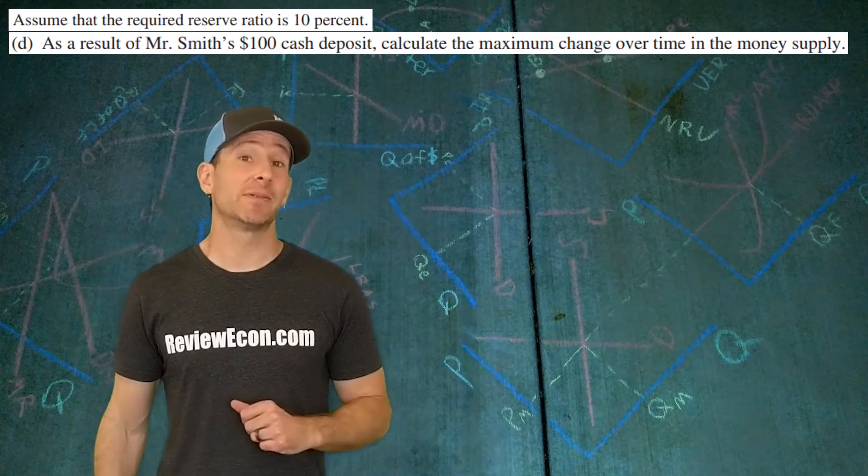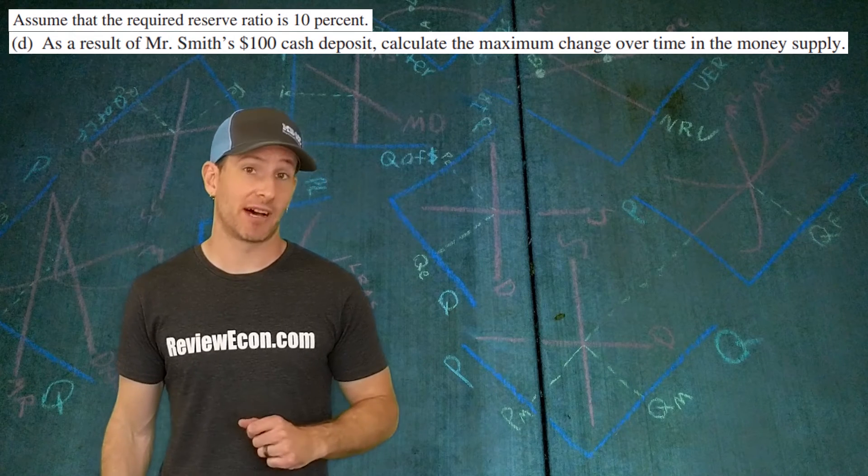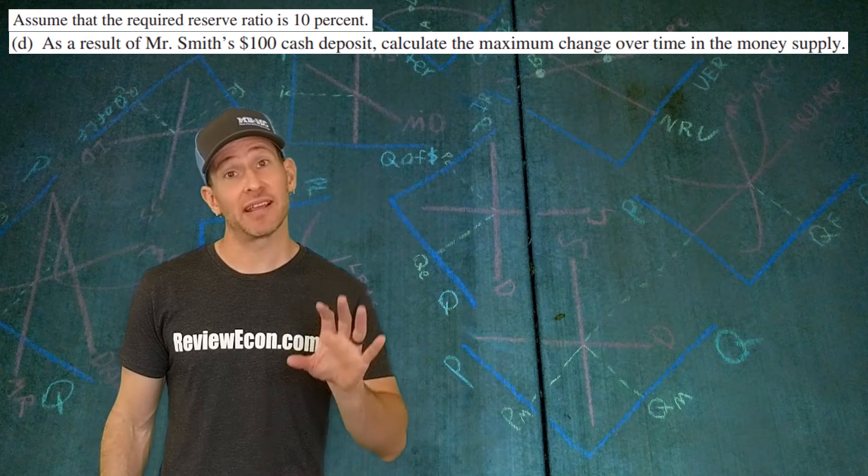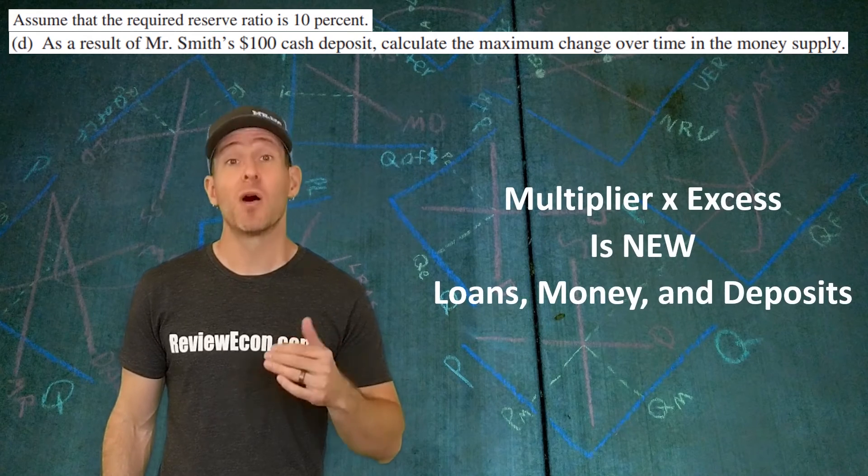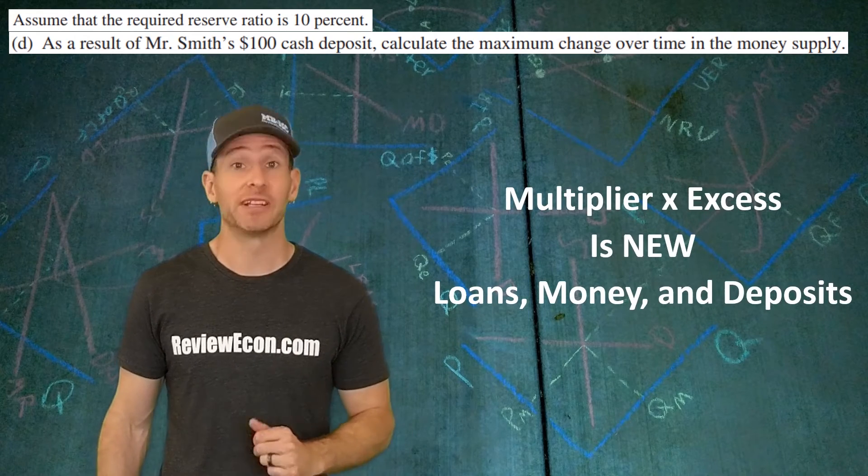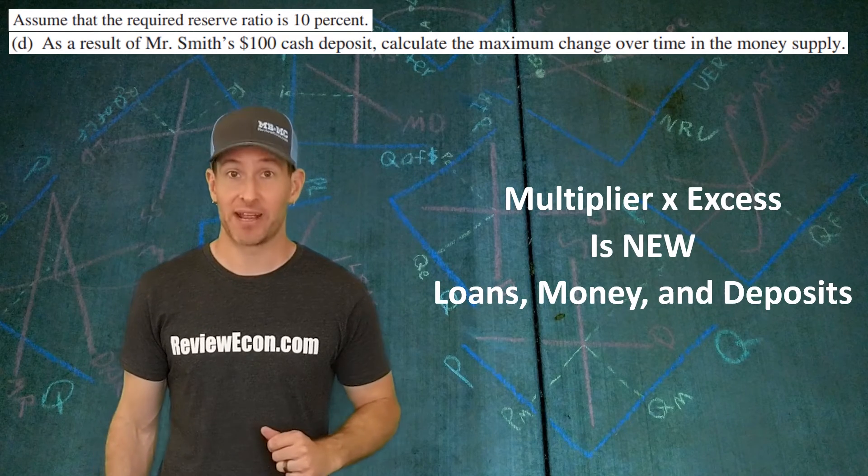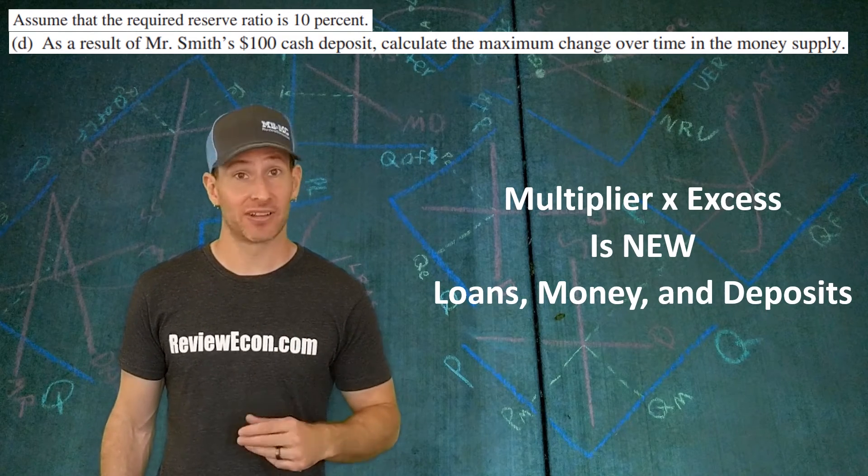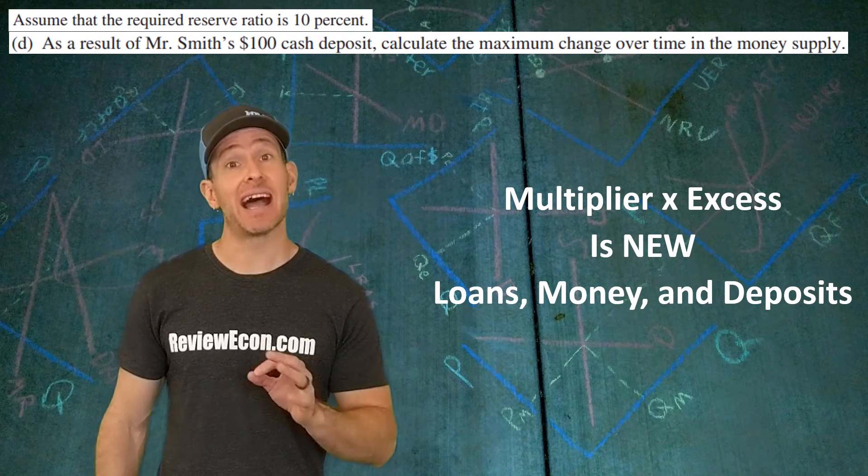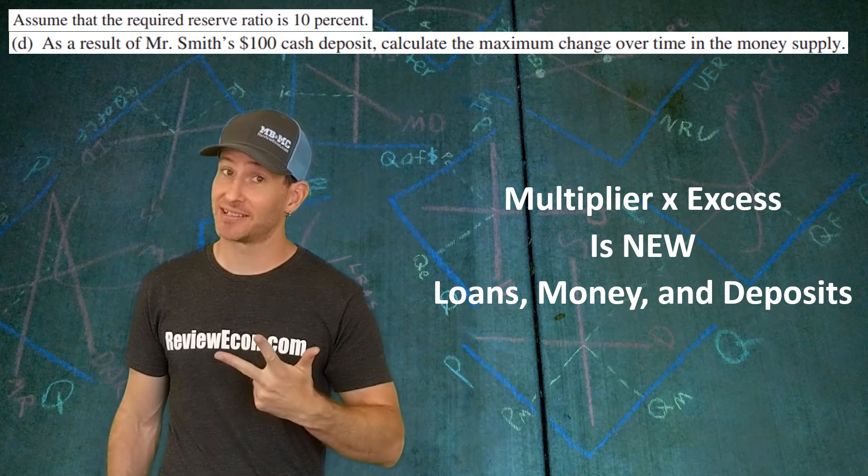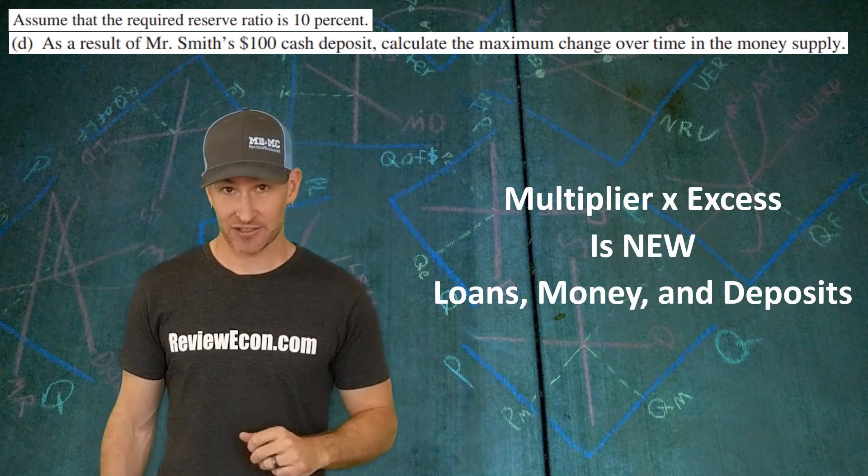For Part D, we're looking at the maximum change in the money supply as a result of Mr. Smith's deposit. Just like we did in Part C, you're going to take the money multiplier, 1 divided by the reserve requirement, which is 10, times the excess reserves that First Superior Bank has, $90. Multiply those together, it gives you $900 of new money, loans, and deposits. Here we're asking for money, so it's $900.